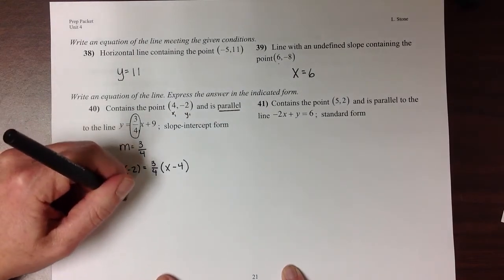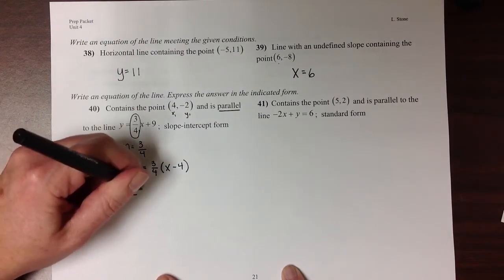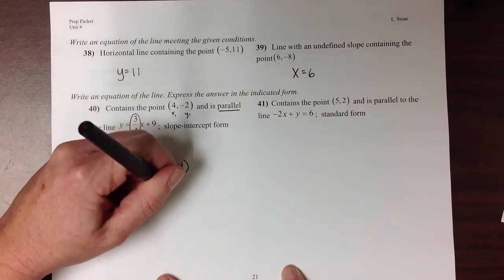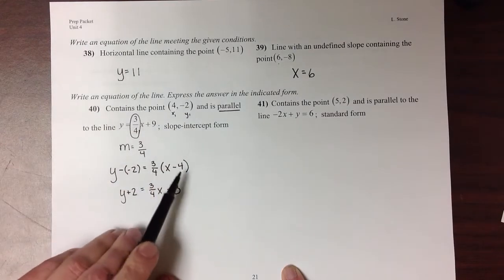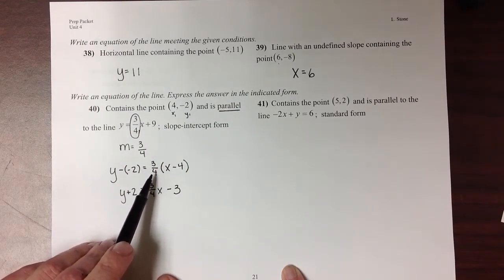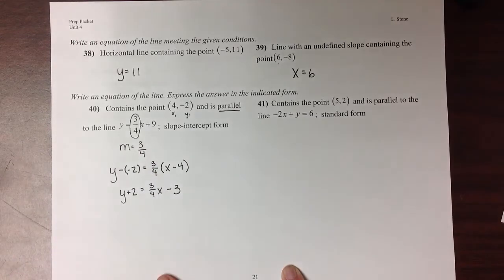Simplifying this, I get y plus 2 equals 3/4 x minus 3 because negative 4 times 3/4 is going to be a negative 12/4, which reduces to 3.